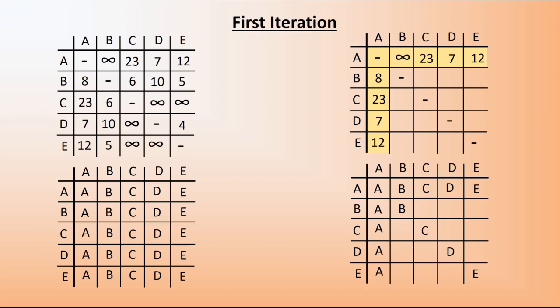We're going to get one cell at a time, starting with the cell going from B to C. Each time, we look at the corresponding cell in the existing table — this one has a value of 6. We compare that to the sum of the two cells headed by shaded columns and rows: the 23 and the 8. 23 plus 8 is 31, which is bigger than 6, so we put 6 back in. We're looking for the smallest each time. Because no change was made to the distance table, we copy the C across in the route table as well.